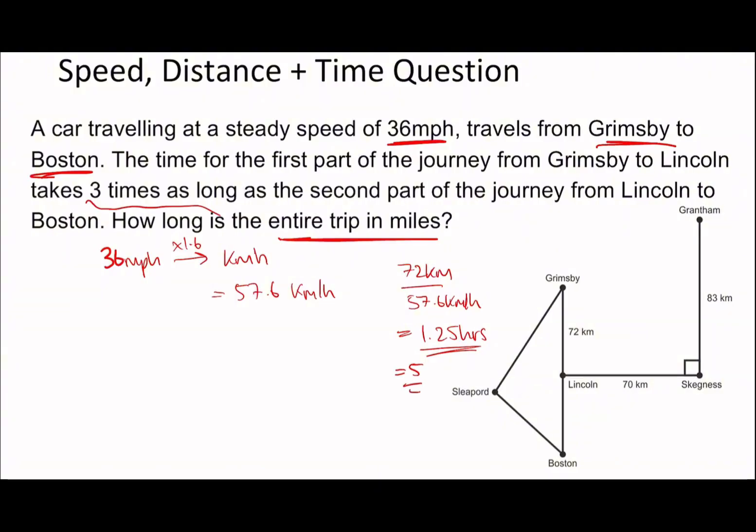This time is 5/4 hours. The time for this is three times as long as the second part, so the second part is times by a third, which is 5/12 hours. The length of the entire trip - add these up and you get 5/3 hours.